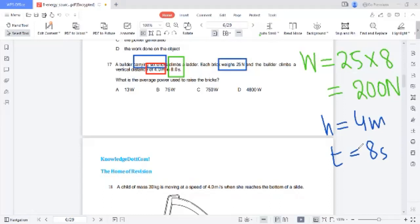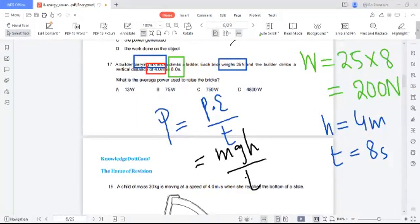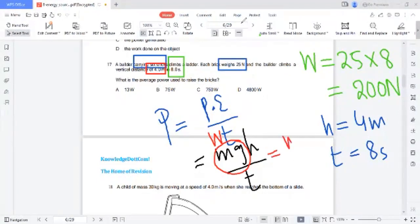What is the average power? For power, the object is moving in upward direction, so it would be potential energy over time. Potential energy is MGH over time. So MG is the weight.